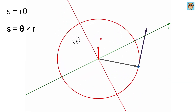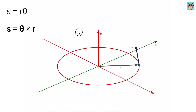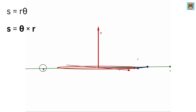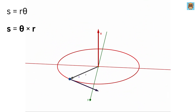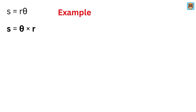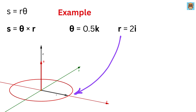This cross product gives the correct direction for s — perpendicular to both r and theta, and hence tangent to the circular path. For example, suppose the angular displacement vector theta is 0.5 in the k-direction and the position vector r is 2 in the i-direction. That means the object is 2 meters from the center along the x-axis and rotates by an angle represented by the vector theta pointing along the z-axis.